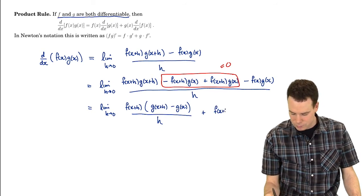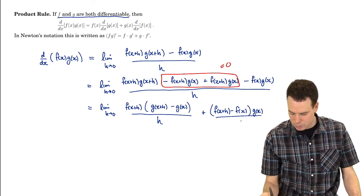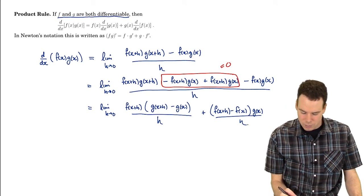So I'm going to factor that out. So f(x+h) minus f(x), and I'm factoring that g(x) out. And then I've got all of that over h.